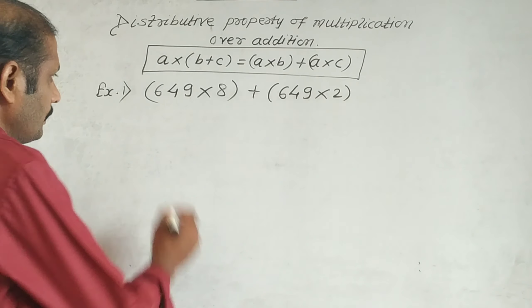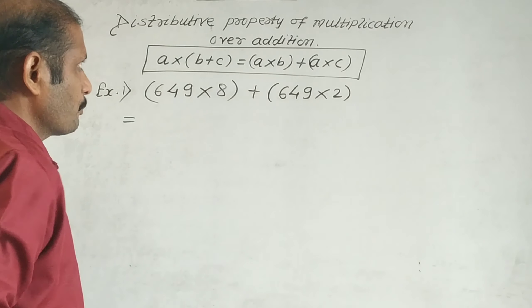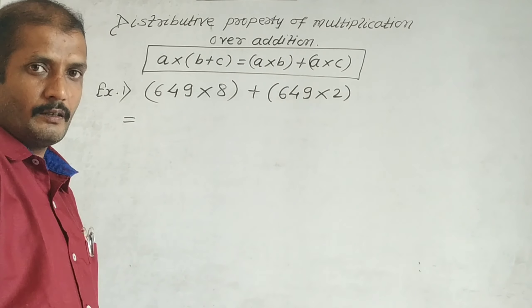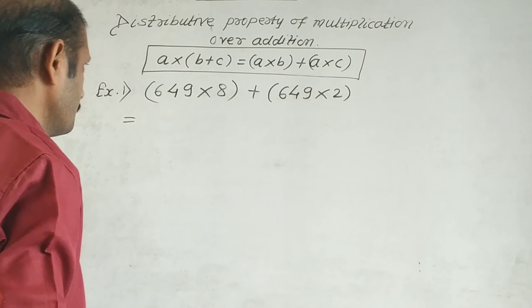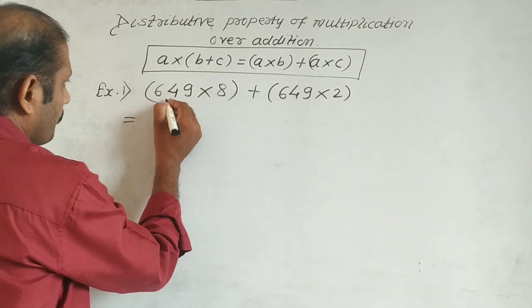This is how we use it. 649 is common, so we take it outside the bracket.